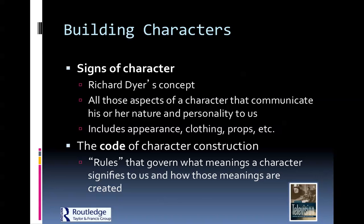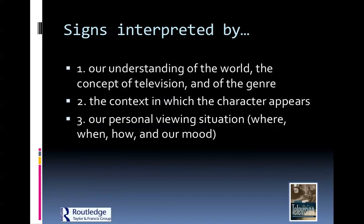We talk about Richard Dyer's concept of signs of a character, which are all those aspects of a character that communicate his or her nature and personality, including appearance, clothing, props, etc. He calls this the Code of Character Construction — rules that govern what meanings a character signifies to us and how those meanings are created.